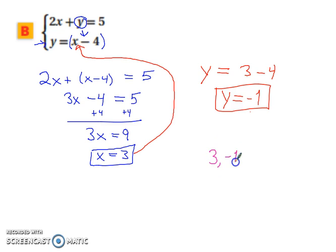Write it as an ordered pair. x, y ordered pair. So you have 3, negative 1.